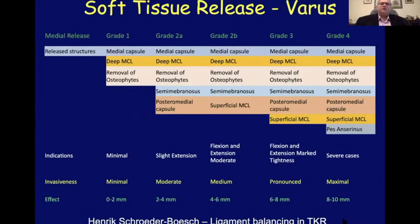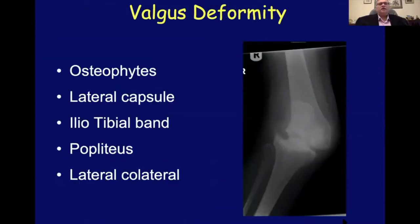I apologize for the busy slide. It shows the stages of what needs to be released to achieve correction for various deformities from grade one to grade four. I borrowed this from Henrik Schroeder-Boerst's article on ligament balancing in total knee replacement.